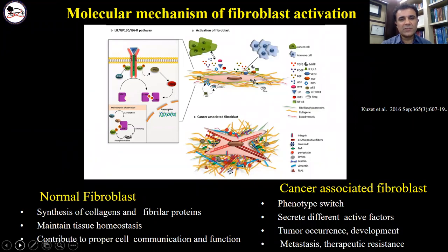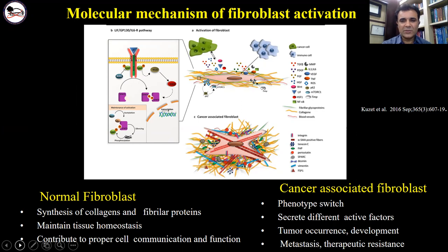Normal fibroblasts are the most common cell types in the extracellular matrix and are responsible for synthesis of collagens and fibrillar proteins. Under normal conditions, they maintain tissue homeostasis and contribute to proper cell communication and function. They can be activated from a diverse set of factors secreted by immune or cancer cells, as well as growth factors such as TGF-beta, interleukins, metalloproteinase, and reactive oxygen species. Once activated, they undergo a phenotype switch and become cancer-associated fibroblasts.